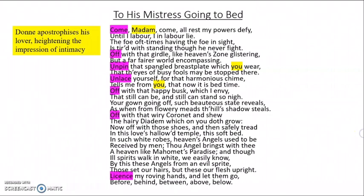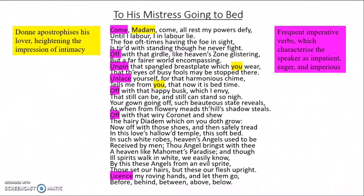You'll also likely notice the many imperative verbs in this poem — commanding words such as 'come,' 'off,' 'unpin,' 'unlace,' etc., which are emphatic in themselves. Notice where they're placed: they're all syntactically placed at the beginning of lines, which provides them with additional emphasis. The effect of this is to characterise the speaker as impatient, eager, and perhaps a little imperious too.